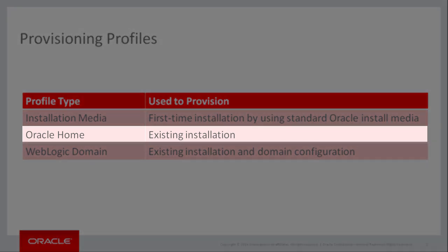The second type is an Oracle Home provisioning profile. This type of profile captures an existing Oracle Middleware installation that has already been discovered as an Enterprise Manager target. This profile includes any modifications or patches you've made to the base installation as well. Administrators use this type of profile to provision custom installations on one or more hosts.